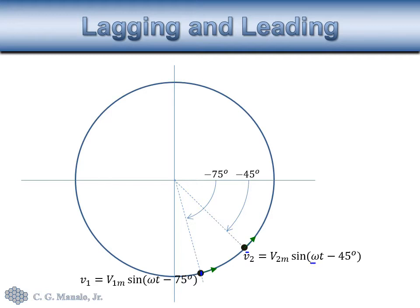Note that since they have the same frequency or angular velocity, their distance will be constant between them. We can see that V1 is running after V2, and it is clearly shown that V2 leads V1 by this amount of angle — that's 30 degrees.